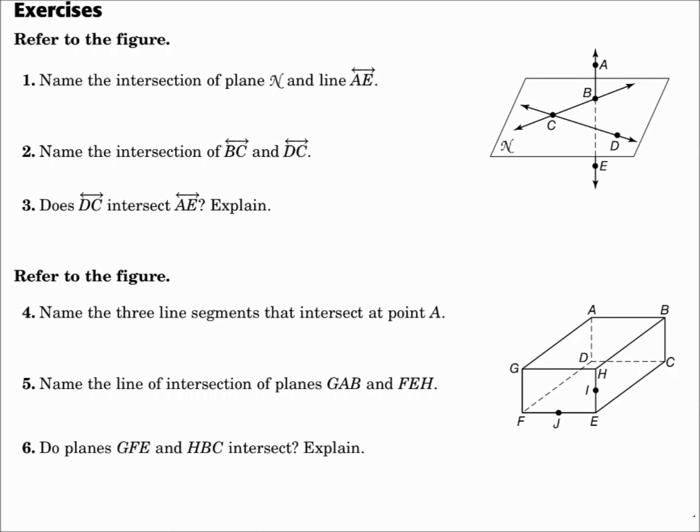Number three. Does line DC intersect line AE? Explain. Line DC is here. Line AE is over here. But you have to consider that this is in 3D. They do not intersect. They are skew lines.